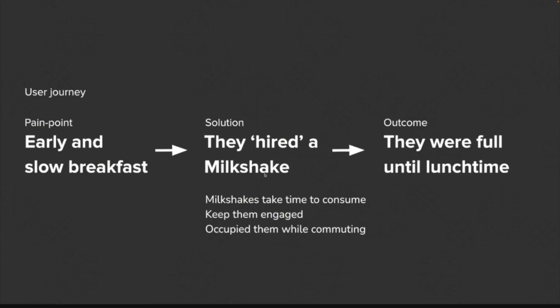They were hiring the milkshake to do a specific task. Because in America, a commute to work takes about an hour, and in that time they want to keep their minds occupied and stay engaged. When they get to work, they want to not be hungry. One participant said they ate a banana, but by the time they got to work, they were hungry before lunch. By hiring the milkshake and consuming it for the duration of their journey, they were full when they arrived and stayed full until lunchtime.